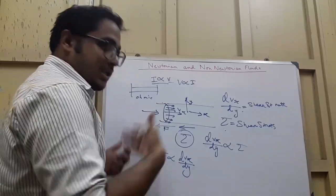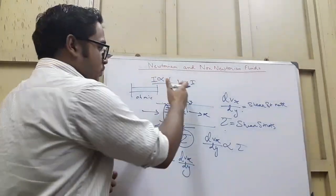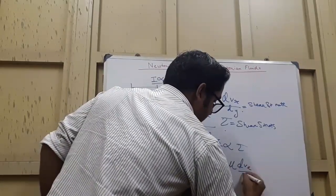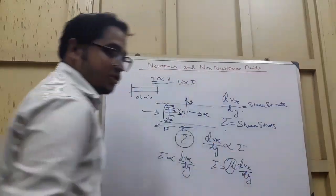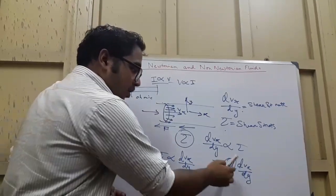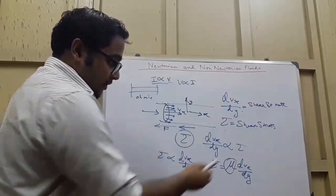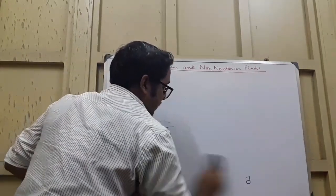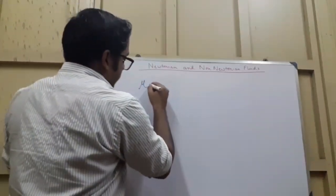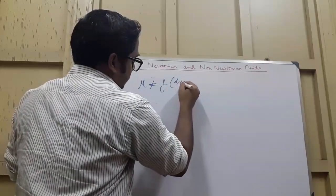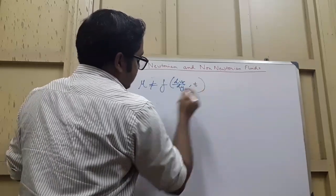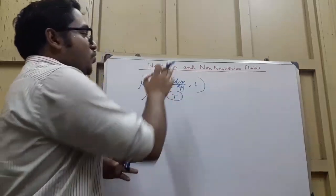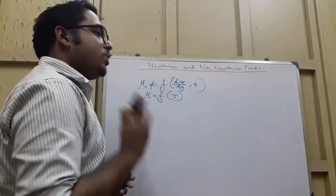With a proportionality constant, just as Ohm's law gives V = IR, here we write tau = mu * (dvx/dy). The constant mu is the viscosity, and it is independent of shear strain rate and time — it is only a function of temperature. This defines Newtonian fluids, analogous to ohmic components in electrical circuits.